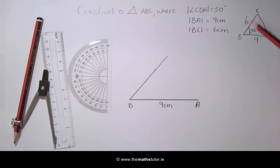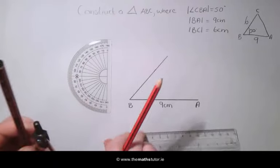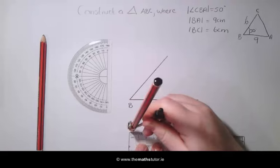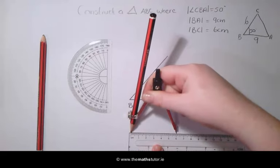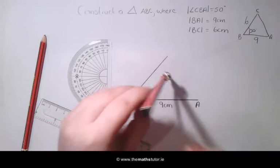As we can see the line BC needs to be 6 cm so taking our compass we measure a width of 6 cm. Place this on B and draw an arc across the arm of the angle.